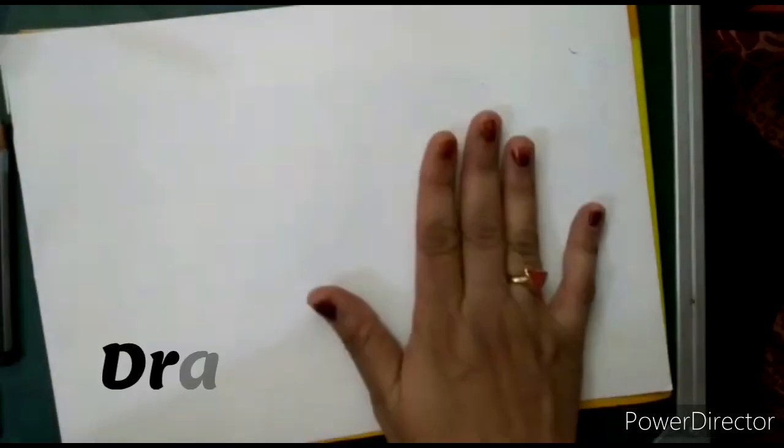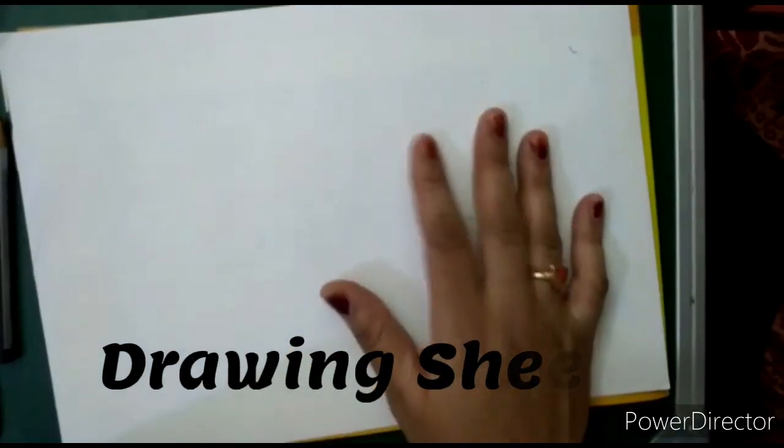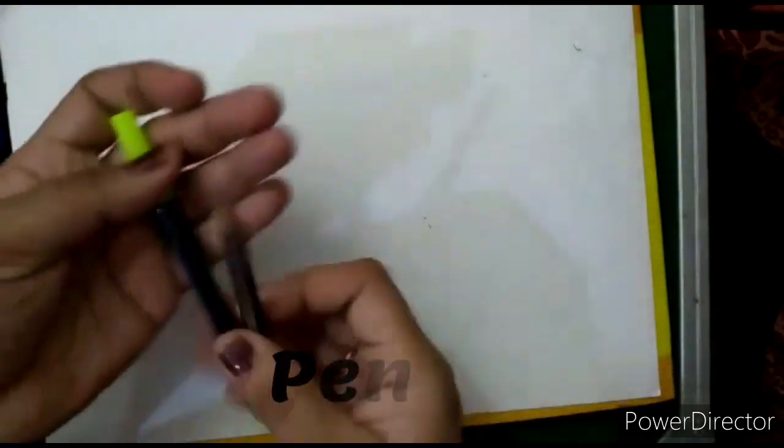Hello everyone, as you all know, there was World Cycle Day yesterday, so we will try to draw a 3D cycle. Let's start. For that, we will need a simple paper like this, then a pencil, a sketch pen, and a scissor.